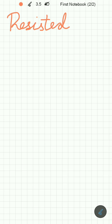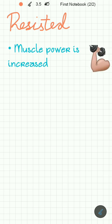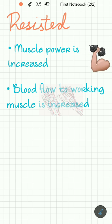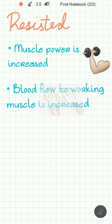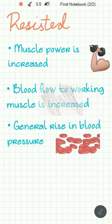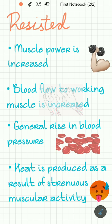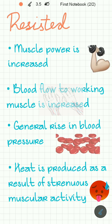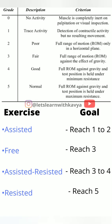The effects of resisted exercises are: muscle power is increased, blood flow to the working muscle is increased, there is a general rise in blood pressure, and heat is produced as a result of strenuous muscular activity. To bring about improvement in muscle grades, these exercises are prescribed, and a summary is provided.